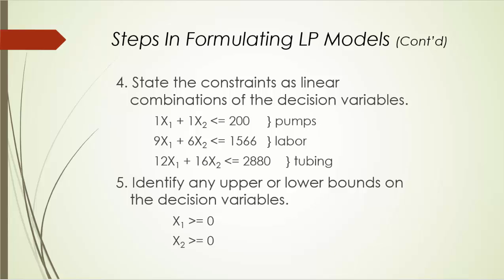In step 5, we identify any upper or lower bounds on the decision variables. In our example, two non-negativity constraints are implied: x1 ≥ 0 and x2 ≥ 0, since it is meaningless to produce a negative number of hot tubs. Of course, if you wish, you may combine steps 4 and 5 together and simply call it finding all the constraints.